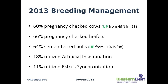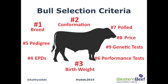There was a question with nine different criteria on bull selection. Producers were asked to rank the top criteria they use when choosing a herd sire, placing a 1, 2, or 3 beside each. The top-ranked criteria were breed, conformation, and birth weight. Lower down were EPDs, pedigree, performance tests, polling, and price. Ranking last — number nine — was genetic tests.